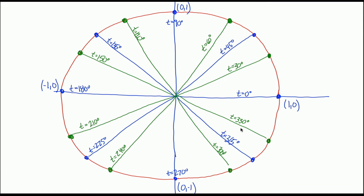We now have the degree measures for all 16 points on the unit circle. The next task is to refer to each of these 16 points in terms of their radian measure. You could convert each degree to radians, but there's an easier way. 0 degrees is 0 radians. It's 2π to go all the way around, so halfway is π radians, halfway to that is π/2 radians, and three-quarters of the way around is 3π/2 radians.